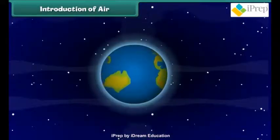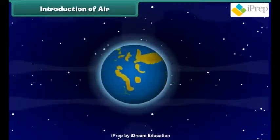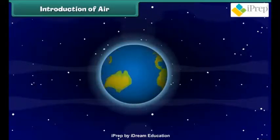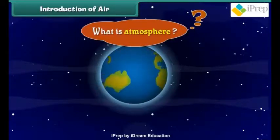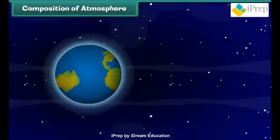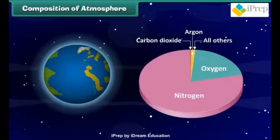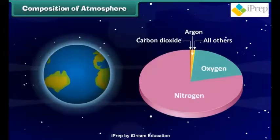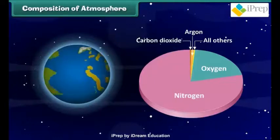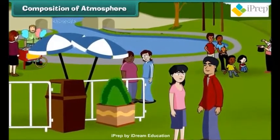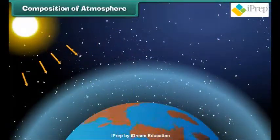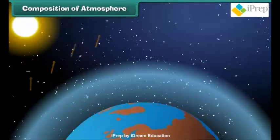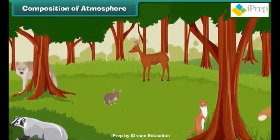Do you know the atmosphere surrounding earth is full of air? But what is this atmosphere? The atmosphere is made up of a mixture of gases, primarily nitrogen and oxygen, that wrap around the earth like a blanket. Without the atmosphere we would not be able to live here. It protects us from the dangerous rays coming from the sun and makes earth a perfect habitat for plants and animals.